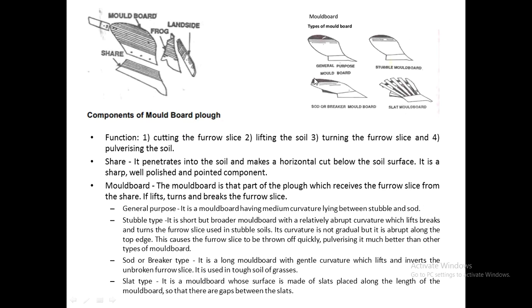The moldboard plow can be either animal-drawn or tractor-drawn. The main components of the moldboard plow are the moldboard, the share, the frog, and the landside. The share is the component which cuts, pulverizes, and upturns the soil. There are different types of share, different types of moldboard, and different types of landside which will be covered in the coming slides.